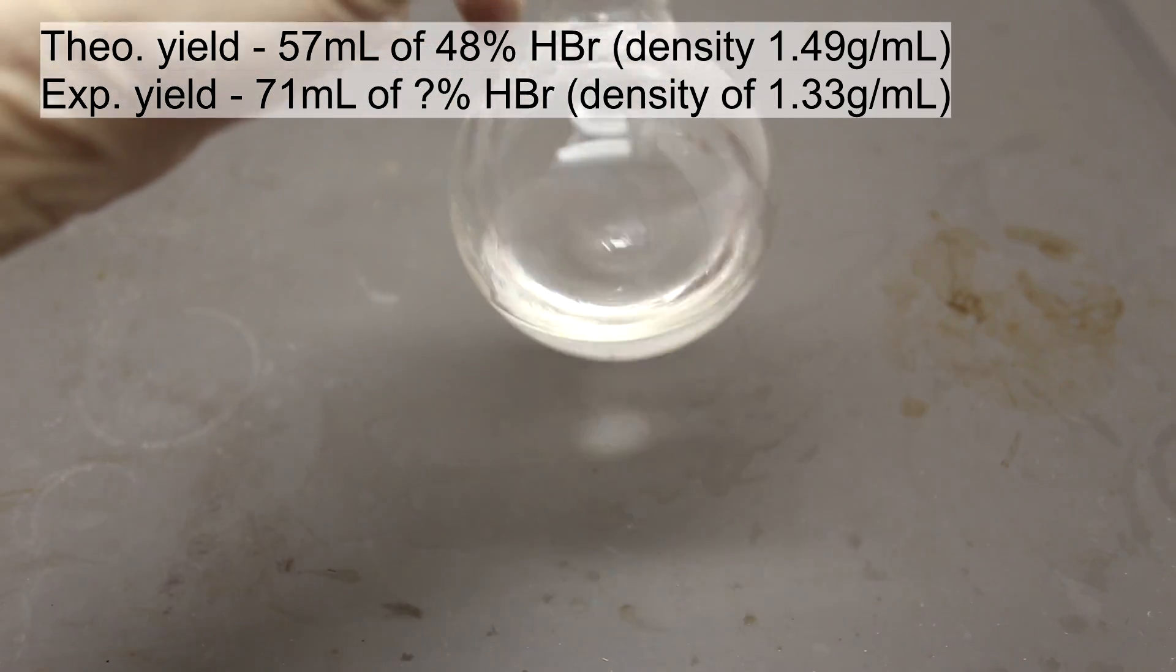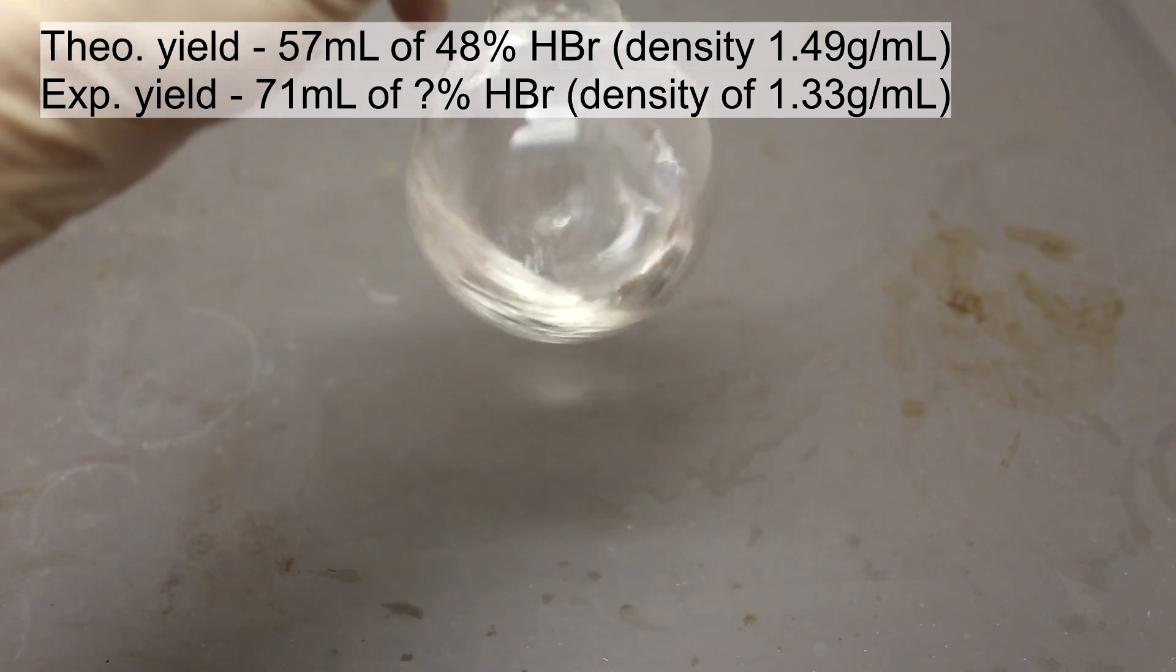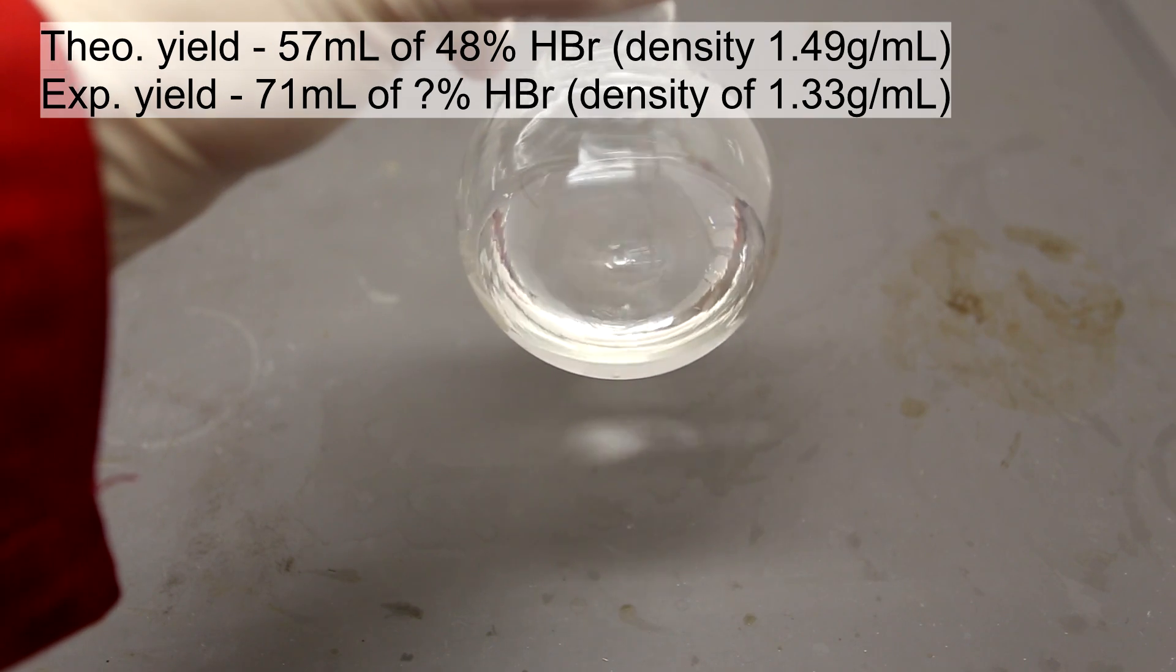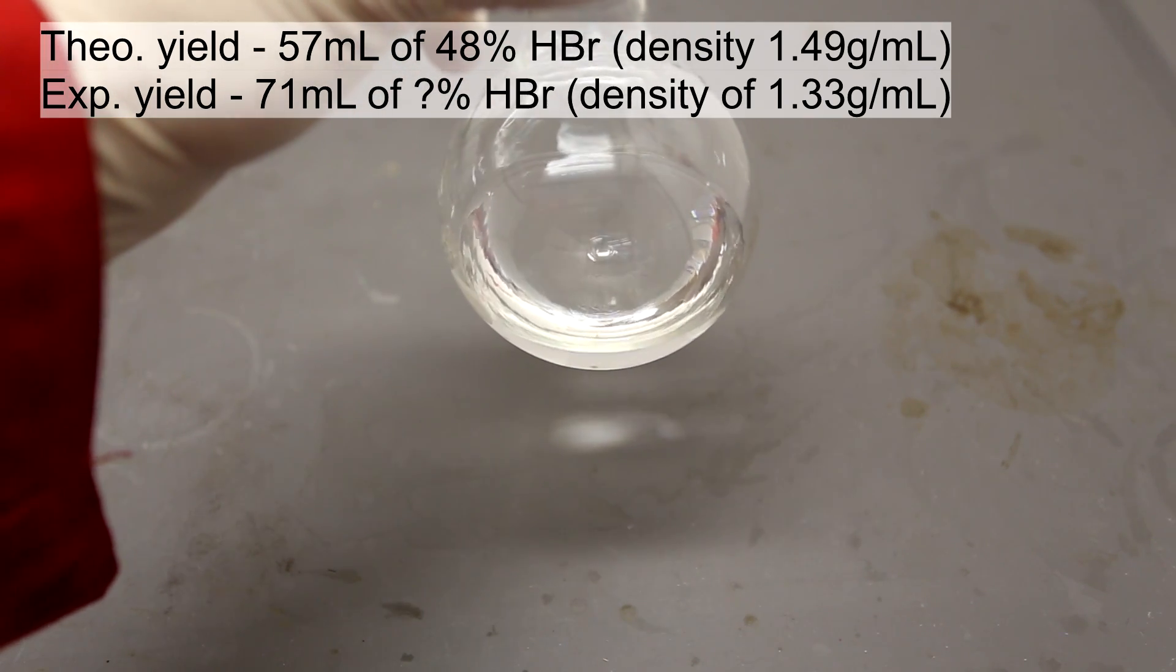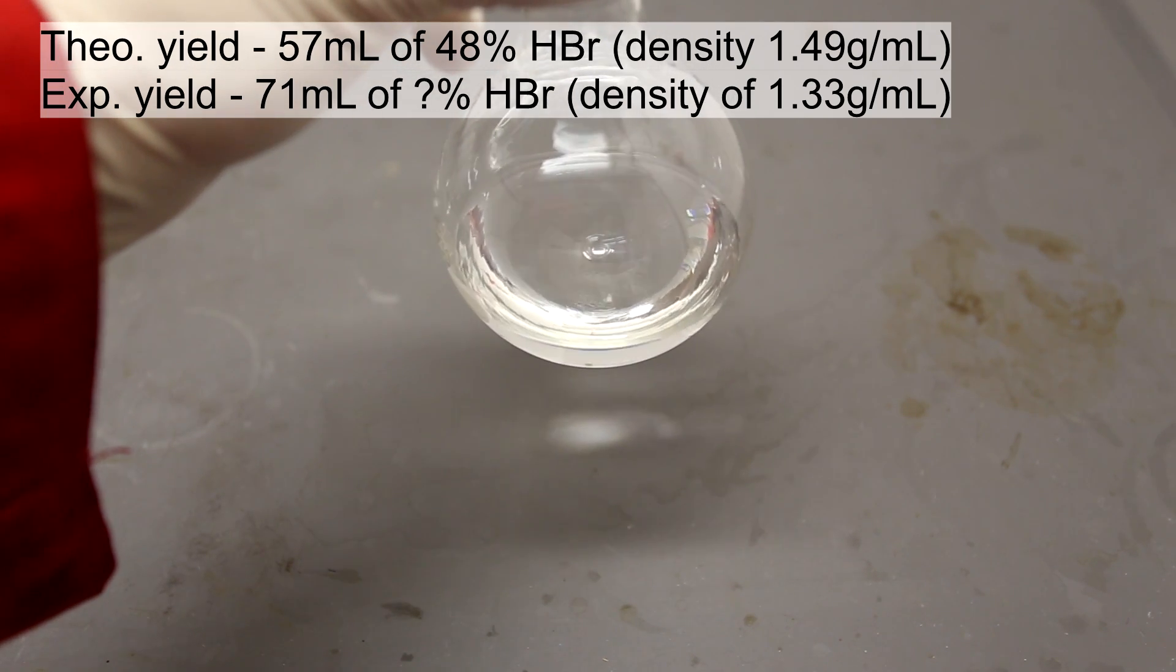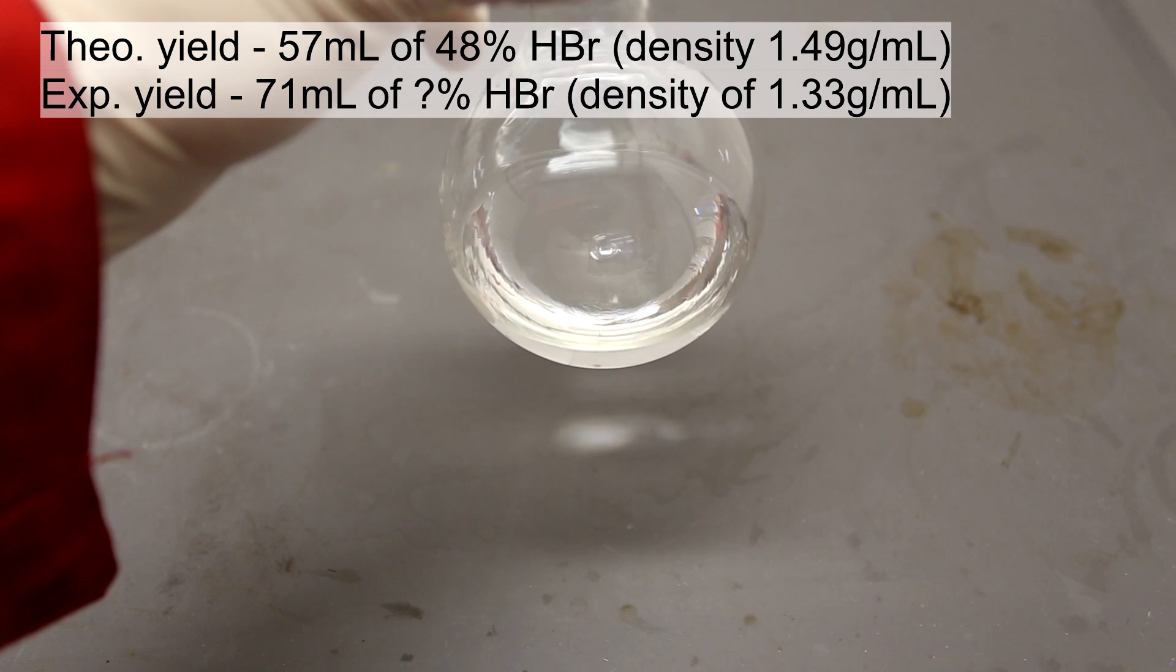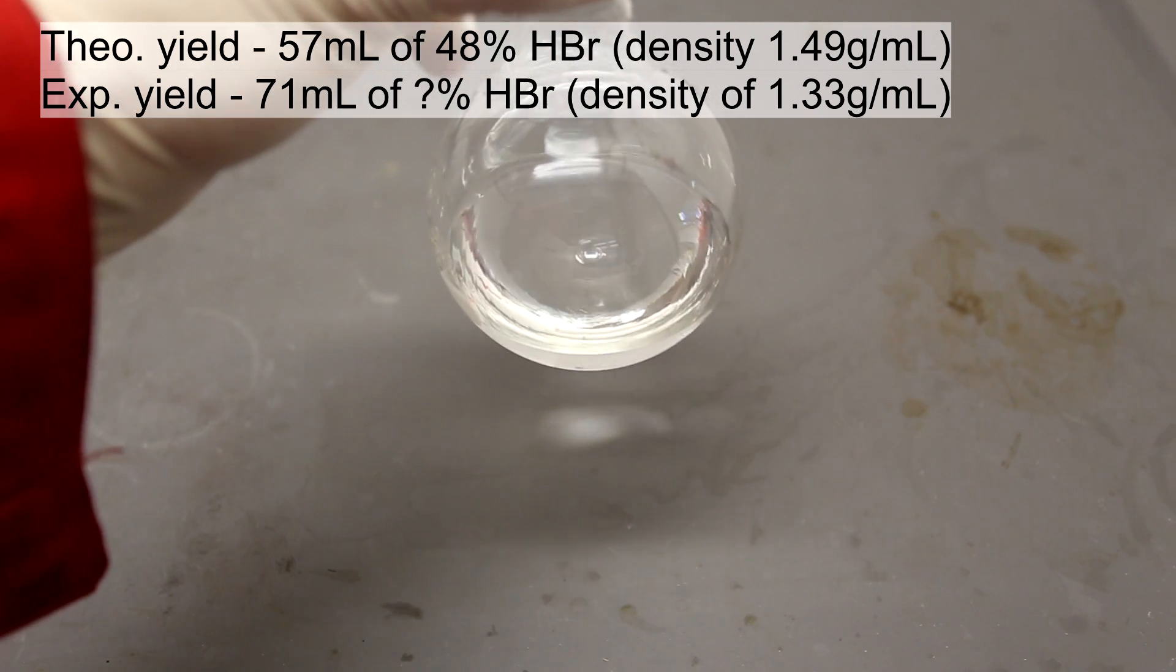This is the final yield of hydrobromic acid in the collecting flask. The final yield was 71 milliliters of 1.33 grams per milliliter hydrobromic acid. The low density means that it contains a lot of water and it will have to be distilled again if you want to increase the concentration. I don't know the actual concentration because I didn't titrate to find out. Because of that, I don't know the yield of this experiment, but in general this reaction has a yield of about 85%.